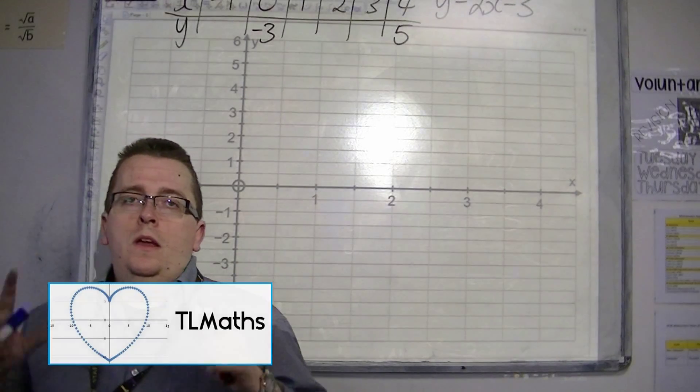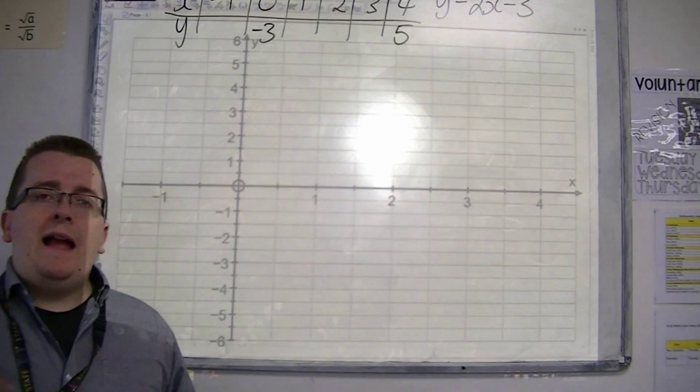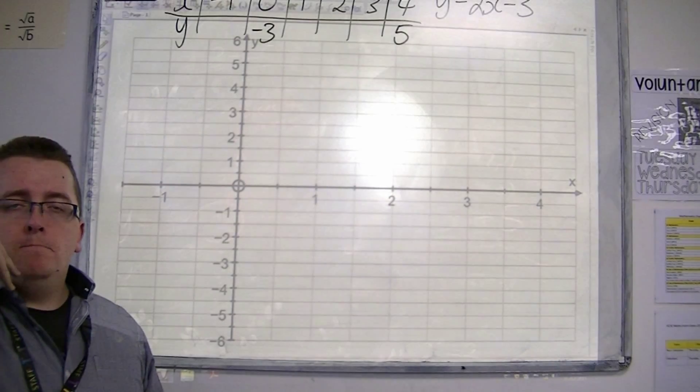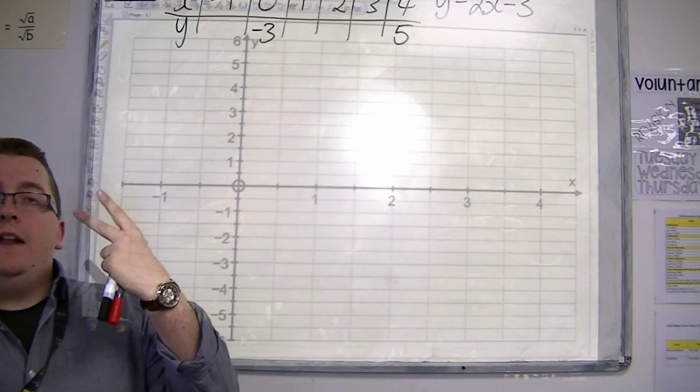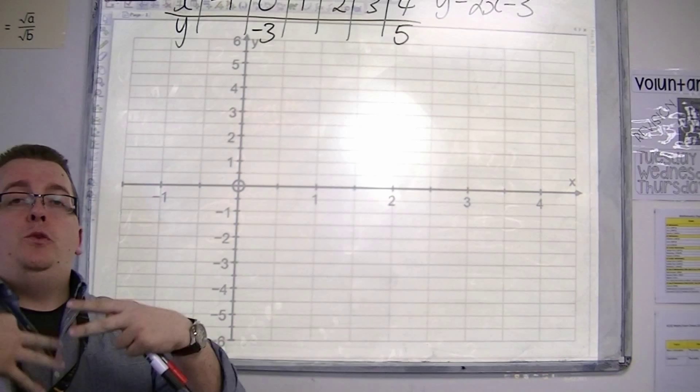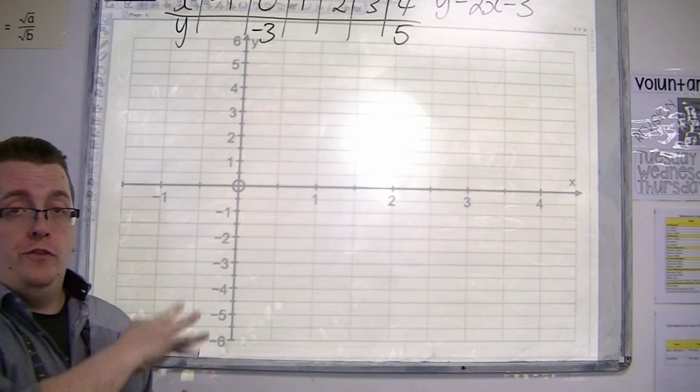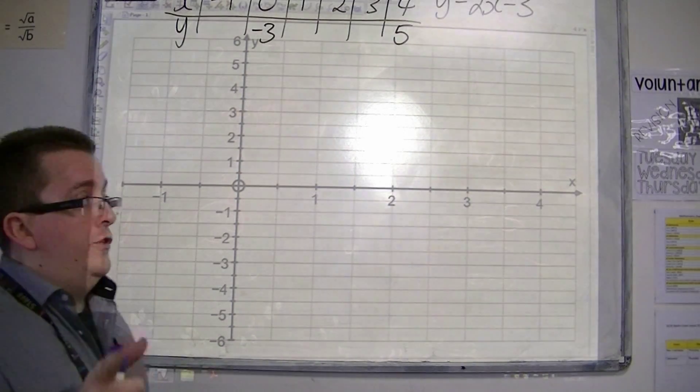Beforehand we were looking at how we can use the gradient and the y-intercept to identify the equation for the graph, for the straight line.